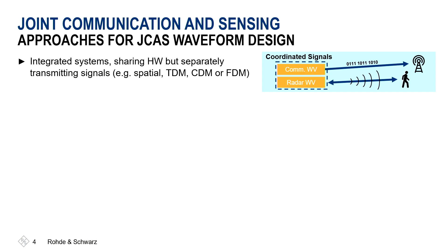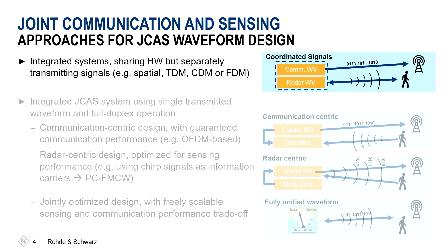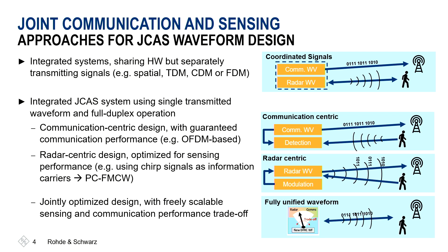A high level of integration of these two aspects is good for cost efficiency, spectral efficiency, and allows us to use information from both worlds. Looking at the waveform aspects: we can integrate both systems by sharing the same hardware, but still having different signals separated in time, frequency, or using code components. For higher integration, we might start from a communication-centric approach, which is potentially OFDM-based, or from a radar-centric approach using chirp signals as today, plus additional modulation for data transmission.